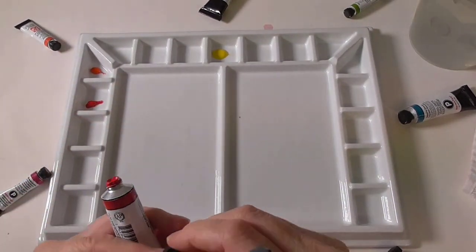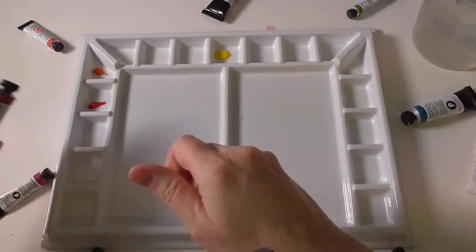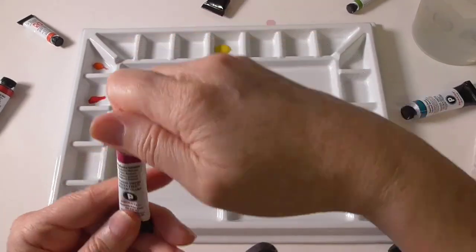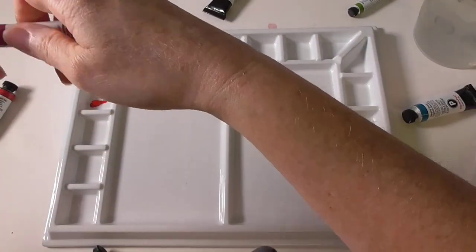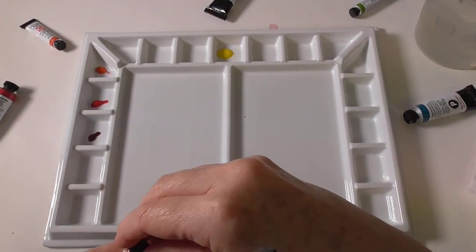Now I've got this one which is permanent red, that's a lovely color as well. Then rhodonite genuine, this is a Daniel Smith Primatek color. This is an actual pigment. I can't wait to try these out.